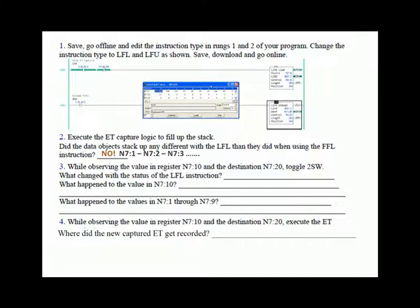And so on. Both the LIFO load and FIFO load fill up the stack in the exact same manner. While observing the value in register N7:10 and the destination N7:20, toggle the switch. What changed with the LIFO load instruction? The done bit went off because it's no longer done—as soon as you unload, you have space to load more. What happened to the value in N7:10? It was copied to the destination N7:20. What happened to the values in N7:1 through N7:9?